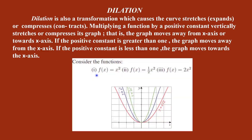Let us see one example. The graph of f(x) = x² is the blue graph. f(x) = (1/2)x² — here 1/2 is a positive constant but it is less than 1. So the graph moves towards the x-axis. See the pink color graph — y = x²/2. The third one is f(x) = 2x² — the positive constant 2 is greater than 1, so the graph moves away from the x-axis. This is the green color graph.